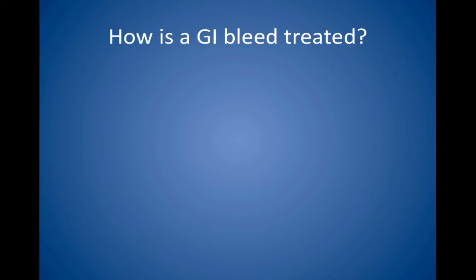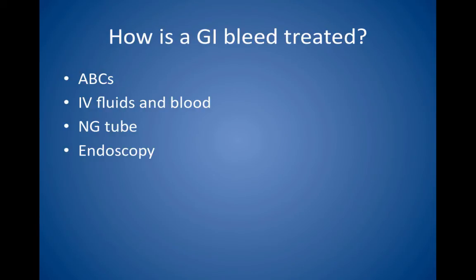How is a GI bleed treated? The first step is to make sure that the patient is stable. Check the ABCs and provide intravenous fluids and blood, if needed, before you try to reach a diagnosis. Next, place a nasogastric tube and test the aspirate for blood to help determine whether the patient has an upper or lower GI bleed. Endoscopy is usually the first test performed, upper or lower, depending on symptoms and the results of the nasogastric tube aspirate. Endoscopically treatable lesions include ulcers, polyps, vascular ectasias, and varices.